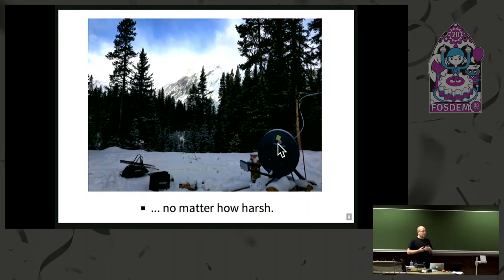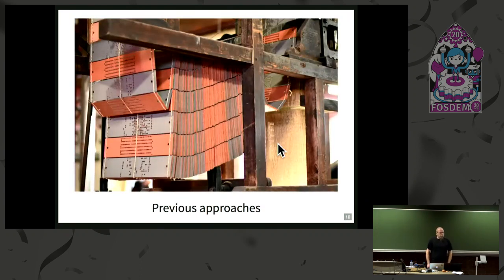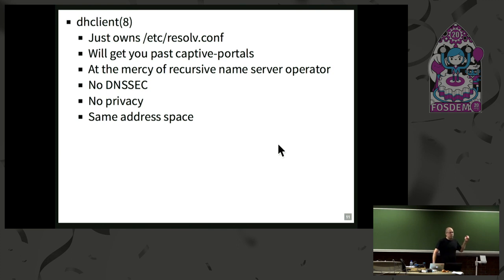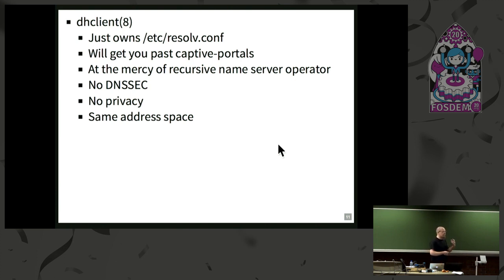No matter how harsh they are — maybe you find yourself in a hut in the Rocky Mountains in the snow. We've done this twice, it was awesome. So what did people do before on their laptop? You just run DHClient. It takes over resolv.conf. You will get past captive portals with this, because that's how they are designed. But you're at the mercy of the nameserver operator — whatever the network hands you. You don't have DNSSEC in the sense of running the crypto on your laptop. Maybe the nameserver does this and gives you an AD flag, but can you trust that? It also probably doesn't give you privacy. And your resolving runs in the same address space — if I run ping, this goes to libc, uses the stub resolver, and talks to something I don't know who actually runs.